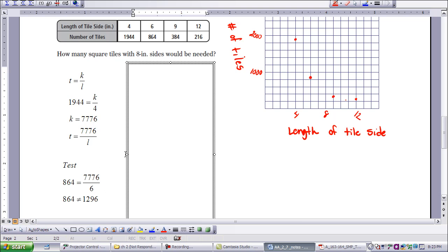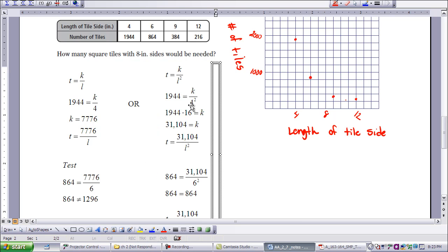And that is if it's an inverse squared relationship. So I'm going to take the inverse squared relationship and insert a data point. So I've got 1944 in place of T and 4 in place of L. So when I multiply that through to solve for k, I get k value at 31,104.